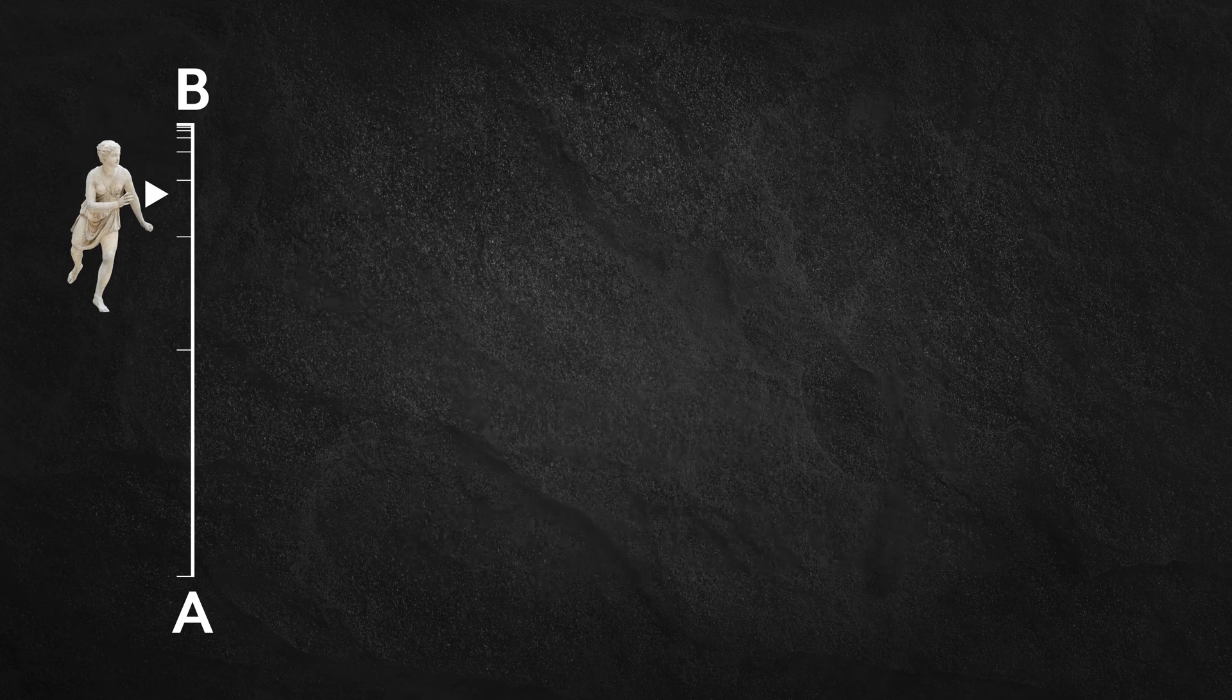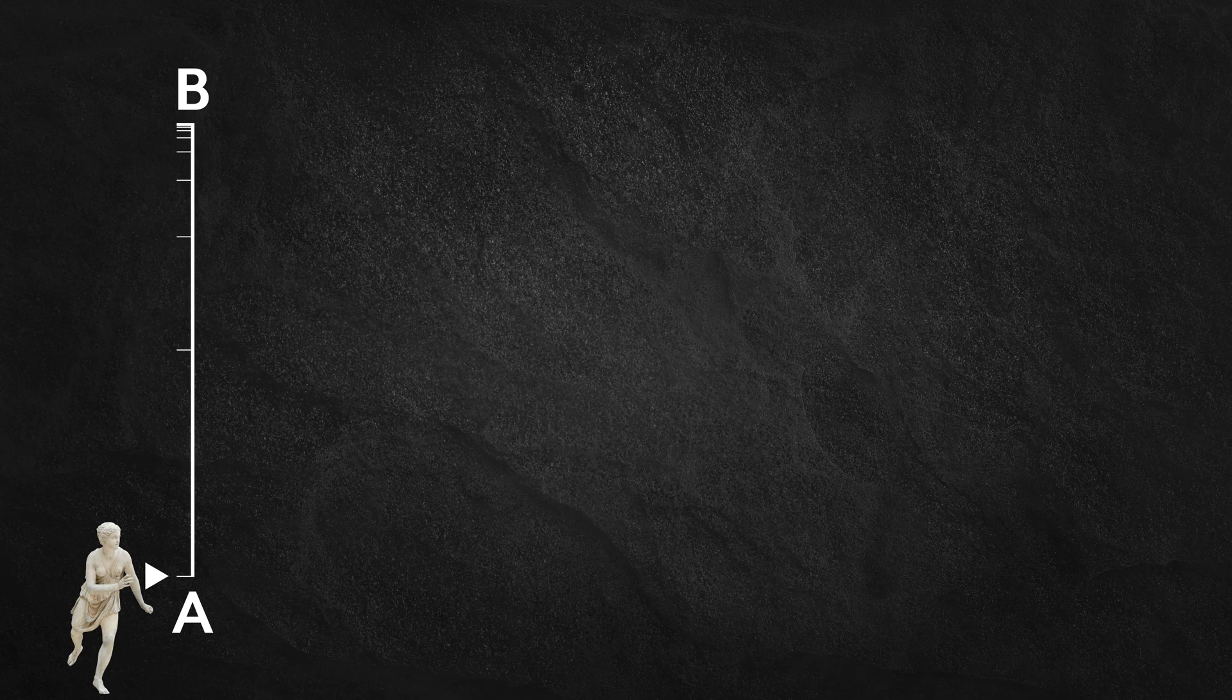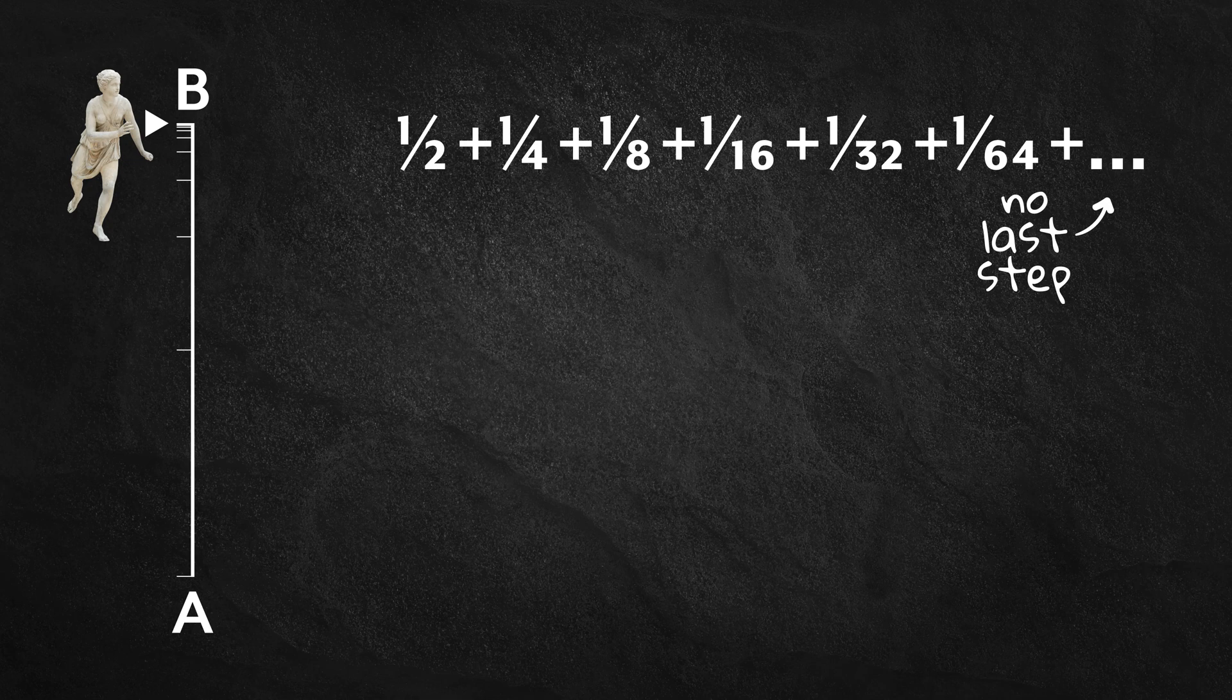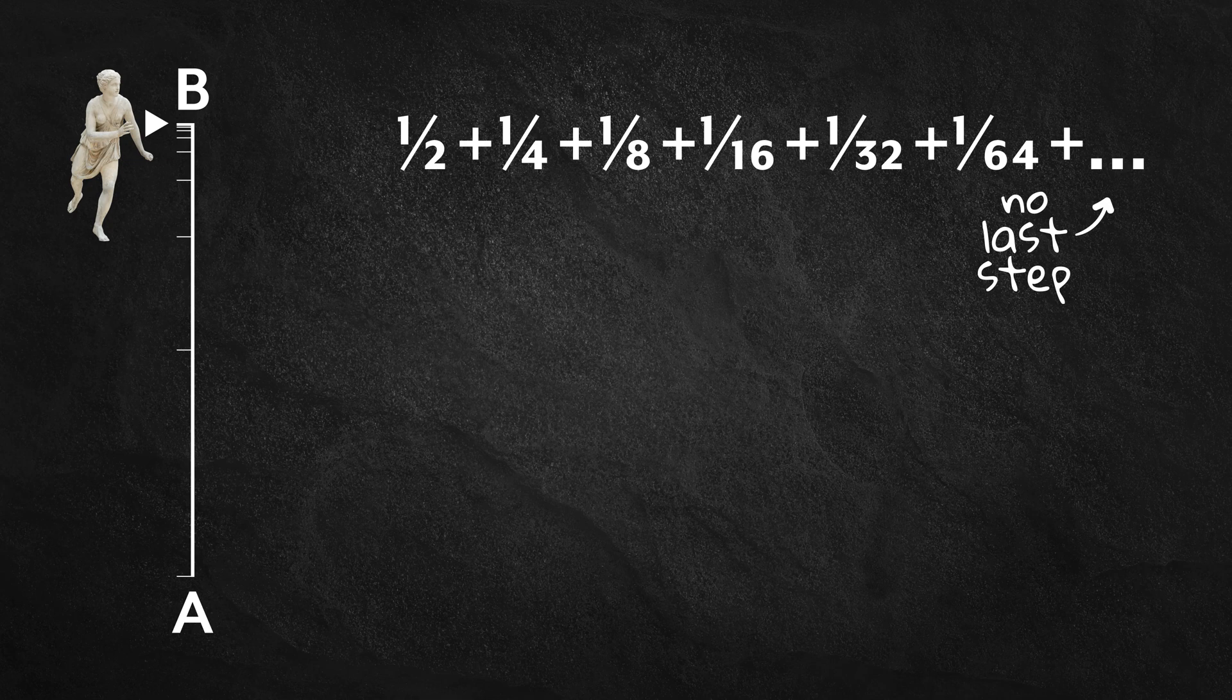Or here's another way to put it. Let's say that Atalanta is at A and wants to get to B. She can approach B by traveling half the distance, and then traveling half the remaining distance, and half the remaining distance, and so on. It's an infinite process with no last step. And since there is no last step, she will never reach B.